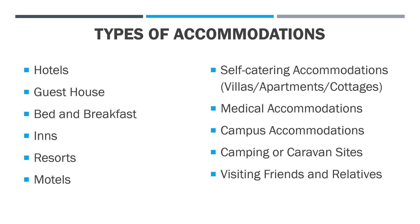Another type of accommodation is resorts. Resorts also have a star rating here in the Philippines. Previously, resorts were rated as Triple A, Double A, and Single A, but nowadays they are also rated using a star rating. Next is motels. Motels are called motels because it is a combination of motors and hotel. Motels provide parking and their main target market are motorists. Motels are usually located along roads and highways because their main service is to provide lodging for motorists who want to stay overnight along the road.